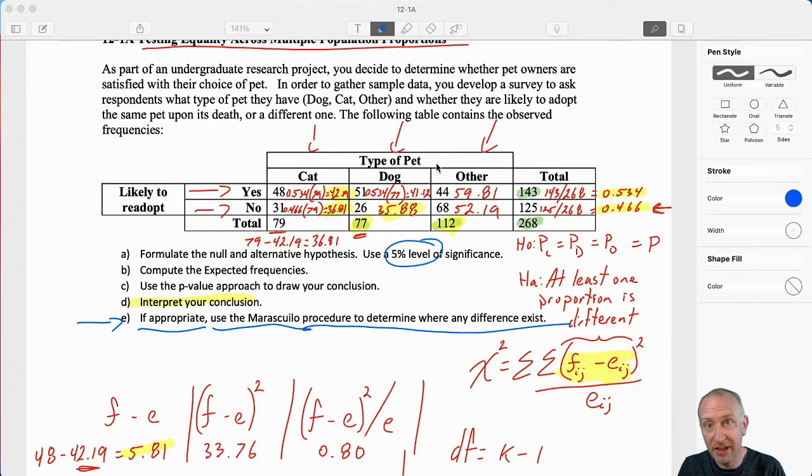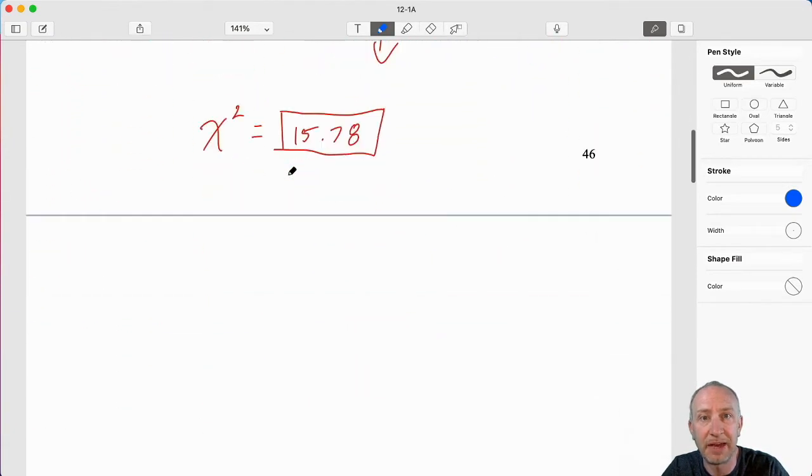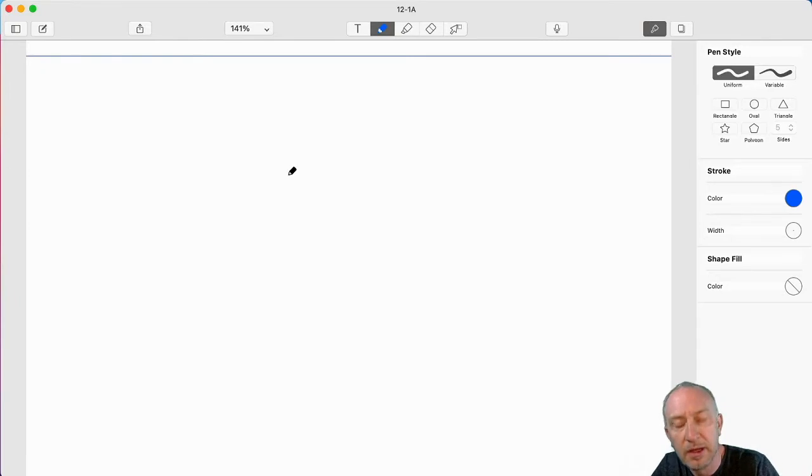We rejected the null hypothesis, which means that it is appropriate to go through the Marascuilo procedure to determine where the difference exists. Now, this procedure, relatively straightforward. We're going to go through a series of two population tests, but it's going to look a little bit different from what you would have seen in Module 10 when we were actually performing tests on two population proportions. It's because we have a little more information about the entire sample of data here. Let me just scroll down past our test here.